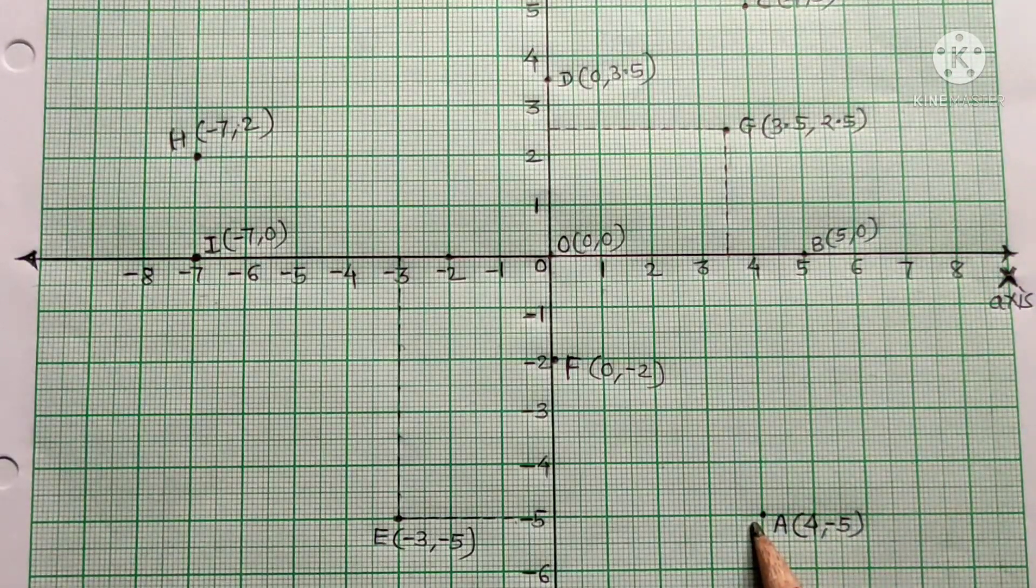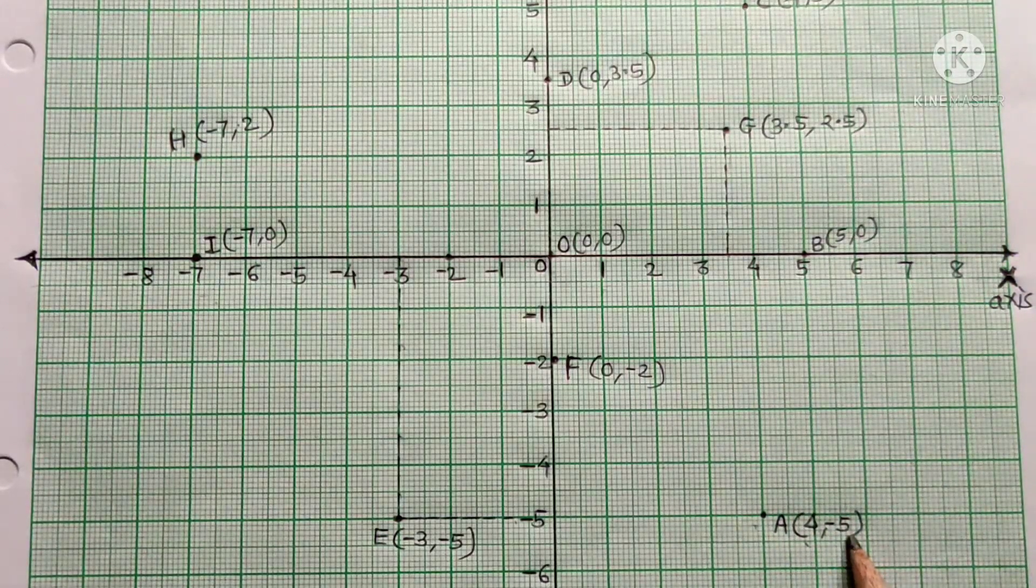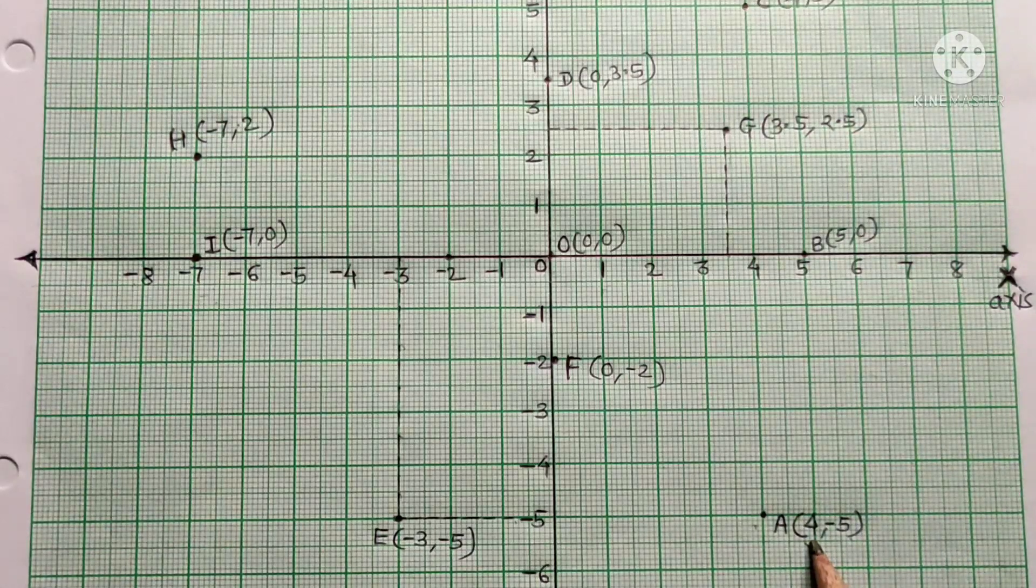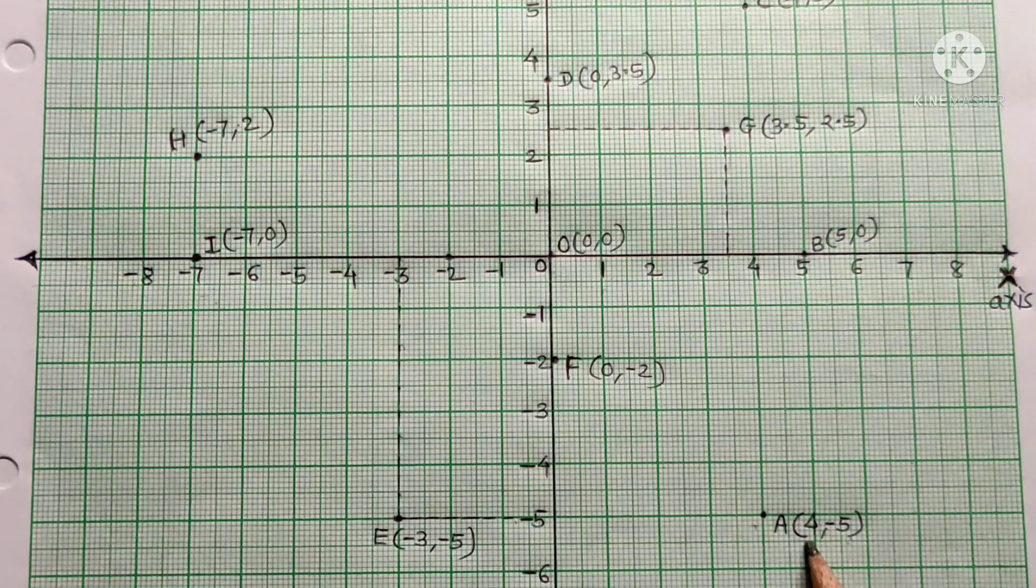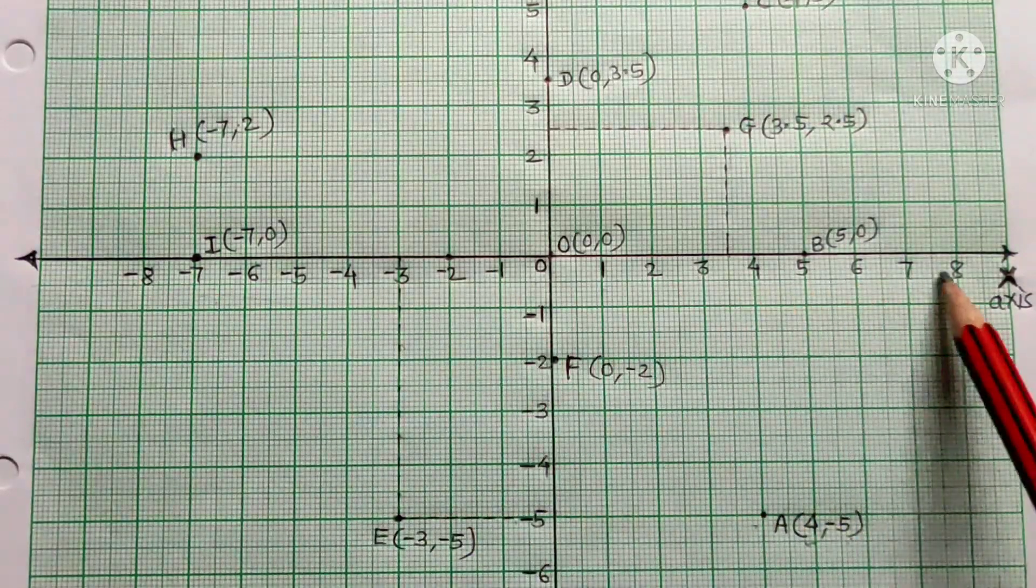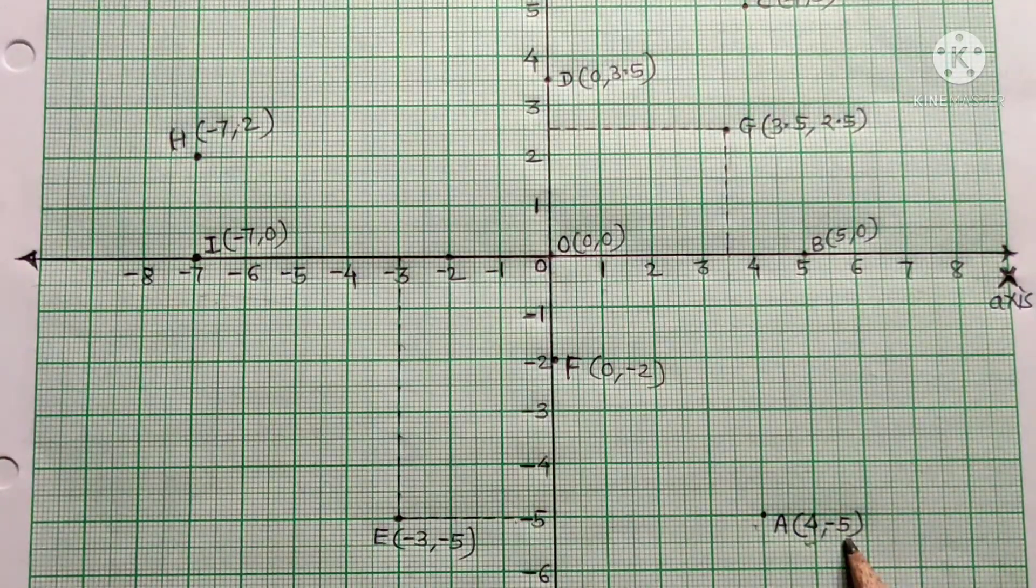The first number is the x-coordinate and the second is the y-coordinate. The first number means we look on the x-axis, and the second number means we look on the y-axis. Here the x-coordinate is 4.